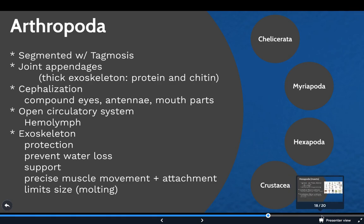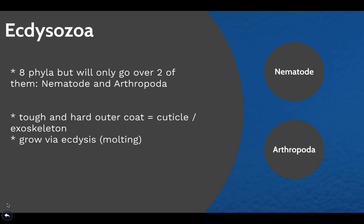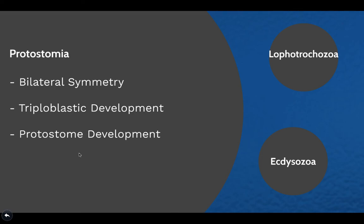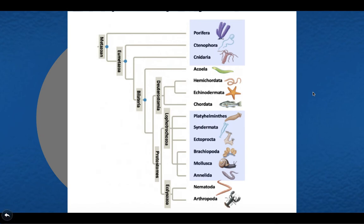Let's go back to the tree. Arthropoda is one of the clades within Ecdysozoa; Ecdysozoa is within Protostomia; Protostomia is within Bilateria; and Bilateria is within Eumetazoa as well as the Metazoa clade. As a study tip, I suggest hand-drawing this tree and labeling all the clades and organisms we've gone over, as well as identifying characteristics that define each clade and those unique to particular organisms and species.